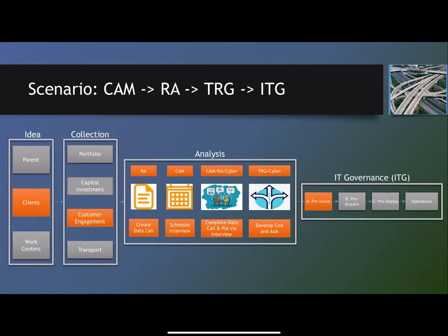That information is packaged together and passed over to the TRG and cyber's architectural arm to develop viable courses of action, including the client's original course of action, which in this situation was the Airtame device. Once that's done, the courses of action, the analysis of alternatives, the data call, and the BRD are all packaged up and presented to the IT Governance Board for a pre-investment review for JSP to determine whether or not this is something that they want to do.